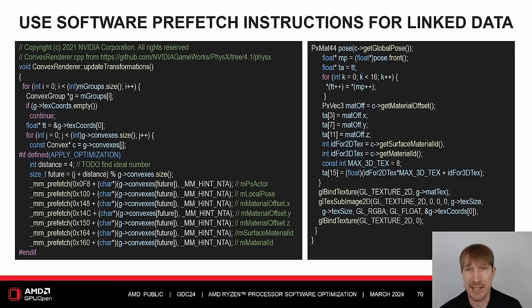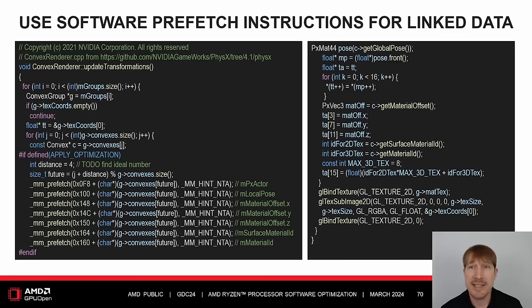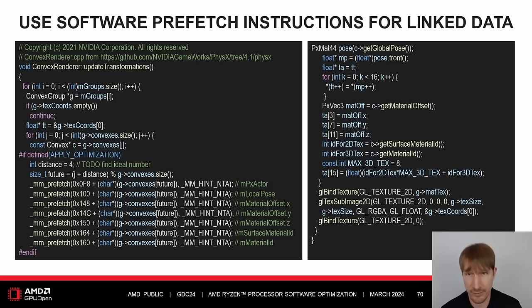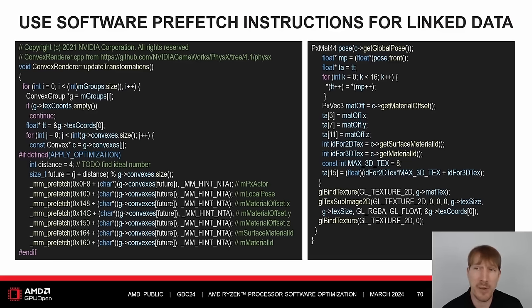The NVIDIA PhysX Calpha demo iterates a standard vector of pointers. Consequently, the Stream and Stride hardware prefetchers are of little help due to the pointer chase. Before the optimization, many of the data accesses in the innermost loop missed the 4MB last-level cache of the AMD Ryzen 7 4700G. Since the convex class member data is not public, offsetof keywords cannot be used and thus literal offsets are shown. Additional performance may be possible by reordering the hot member data to occupy only one cache line rather than four.